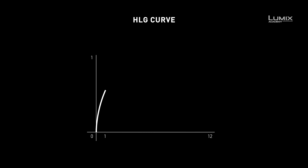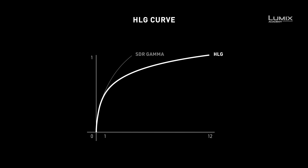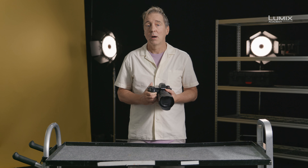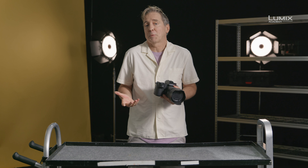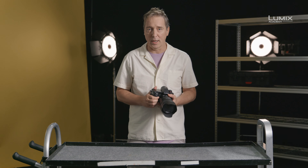The HLG format works around this obstacle by coding both SDR and HDR footage into the same broadcasting signal. When being played back, the HLG signal will display in HDR if your television is compatible with the HLG HDR format; otherwise it displays in regular SDR.